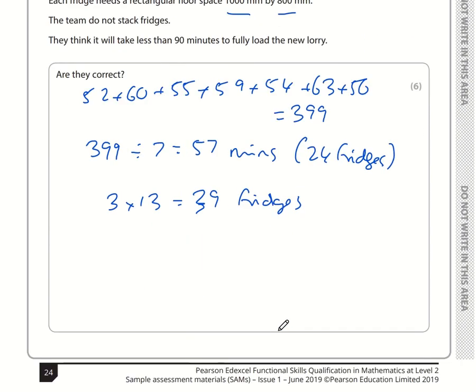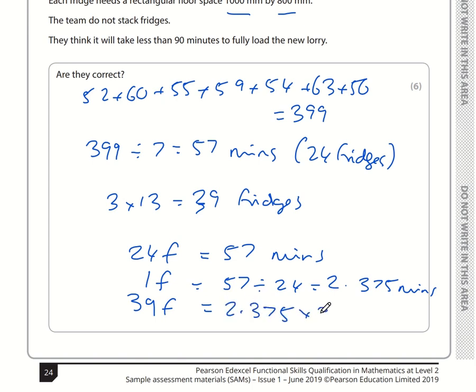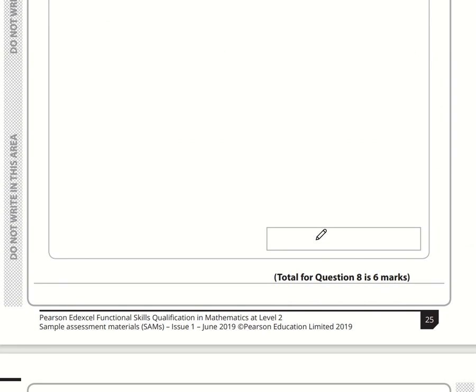We know 24 fridges equals 57 minutes. We want to work out how long for 39 fridges. We need to work out how long it takes to load one fridge. If 24 fridges take 57 minutes, then one fridge is 57 divided by 24, which is 2.375 minutes. So 39 fridges is 2.375 times 39, which is 92.625 minutes. They think it will take less than 90 minutes. It's going to take 92.6 minutes. Are they correct? No, they are not.